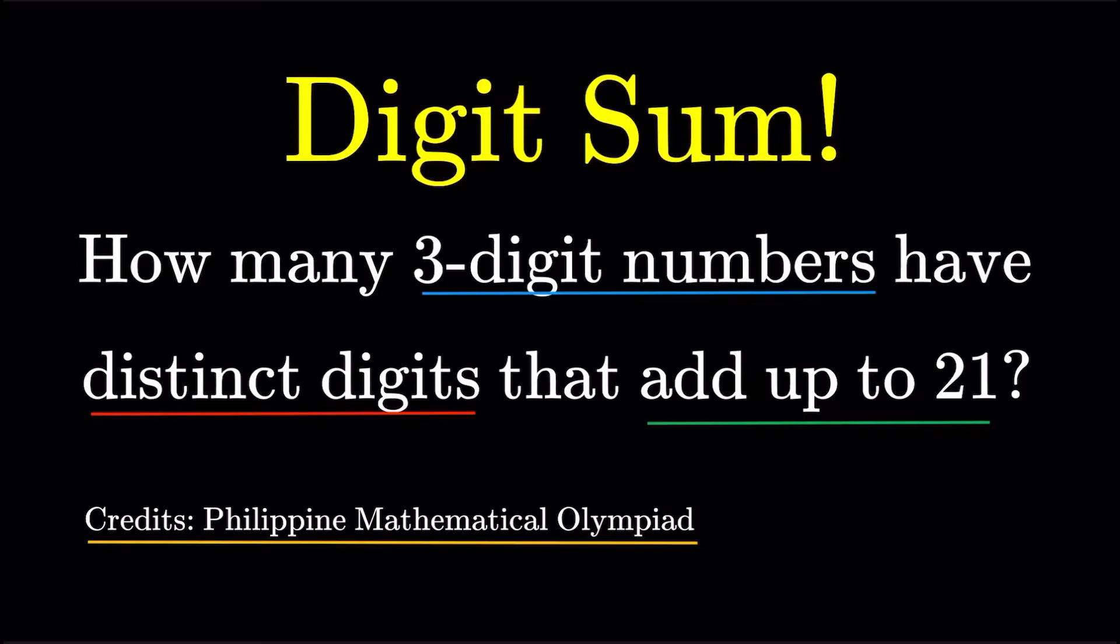So you could kind of do some trial and error, and I'll just give you an example here. 975 works because, if I were to check, 21 is equal to 9 plus 7 plus 5. That works.